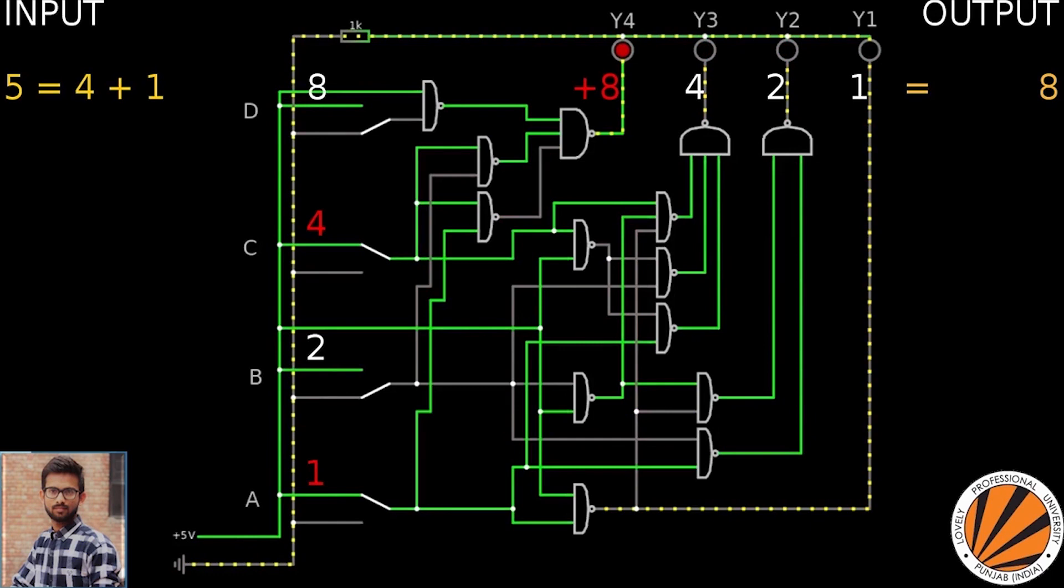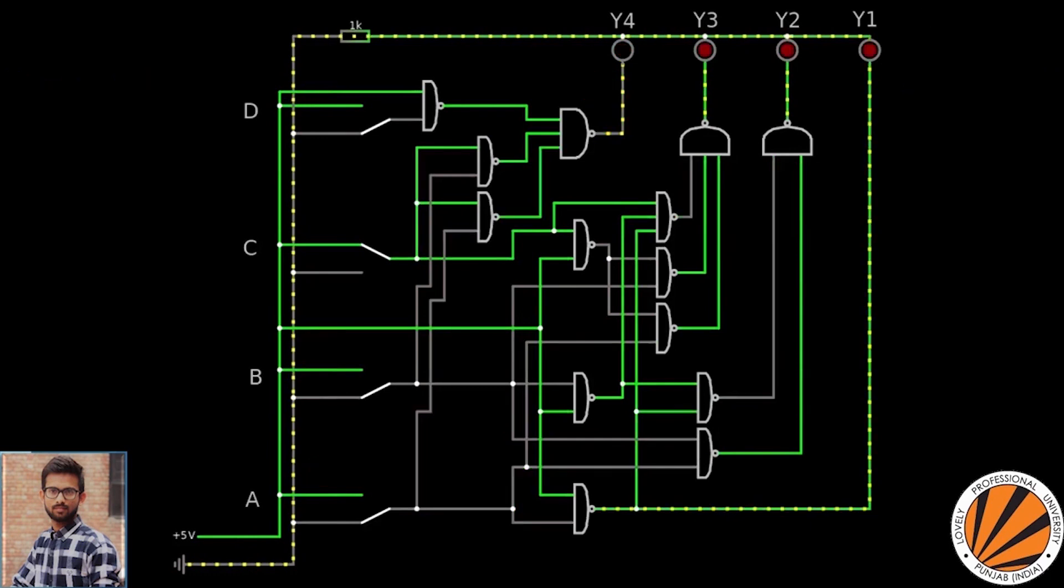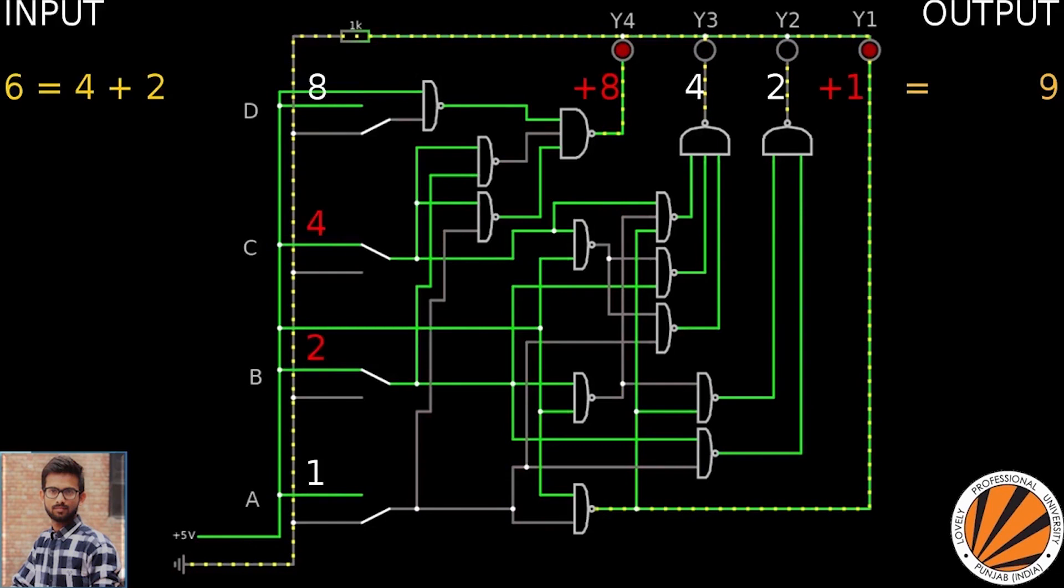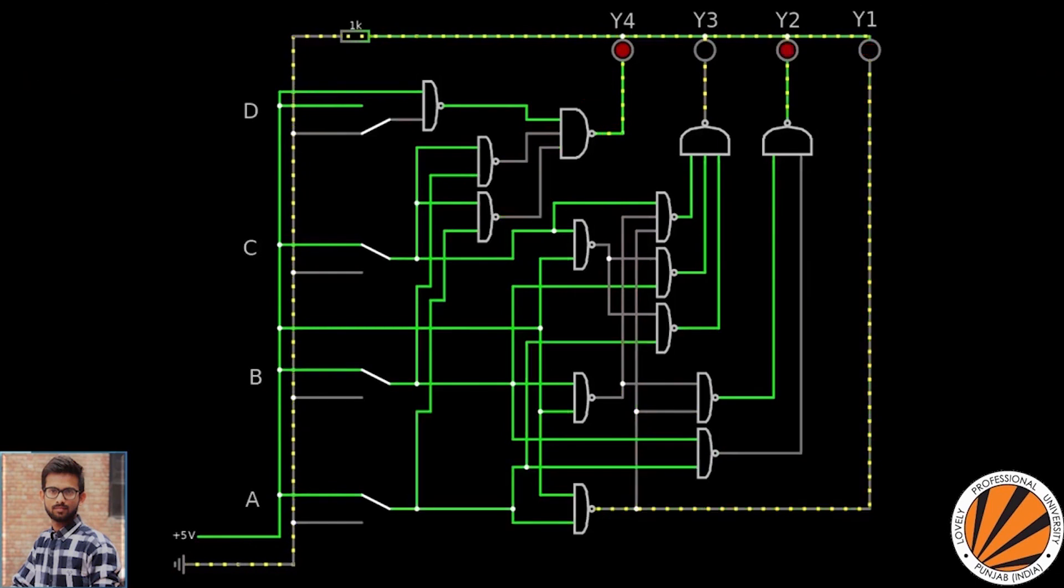Now input is 5, and output is 8. So it is working perfectly. We can say that this BCD to Excess-3 Code Converter is working very well. Input 6 plus 3 equals 9.